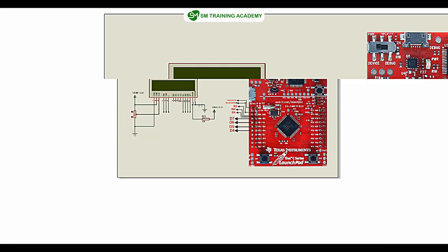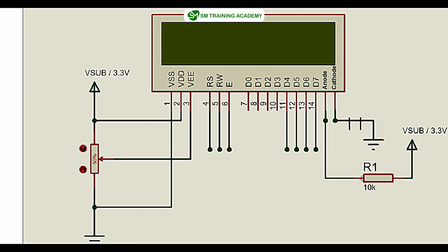The third pin is the contrast pin of the LCD, which is useful for increasing and decreasing the font contrast printed on the display. We connect it to a 10 kilo-ohm variable resistor. The center terminal of the variable resistor connects to the VEE pin, one end connects to the power source, and the other end to ground. Rotating the knob gives maximum contrast at one extreme and nothing visible at the other.